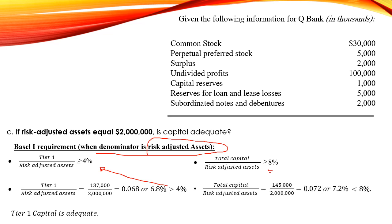For total capital over risk-adjusted assets: $145,000 / $2,000,000 = 7.2%. Since 7.2% is less than the required 8%, the total capital is not adequate. So Tier 1 capital is adequate, however the total capital is not adequate.